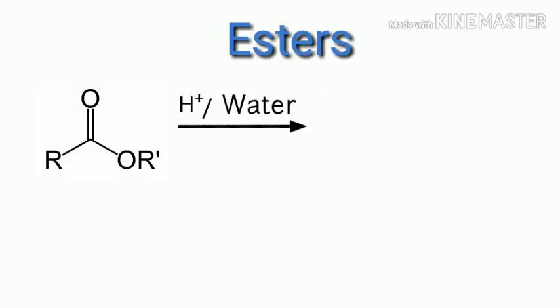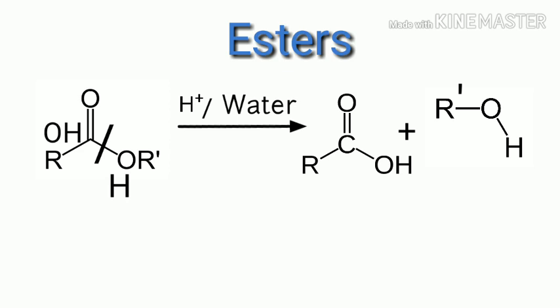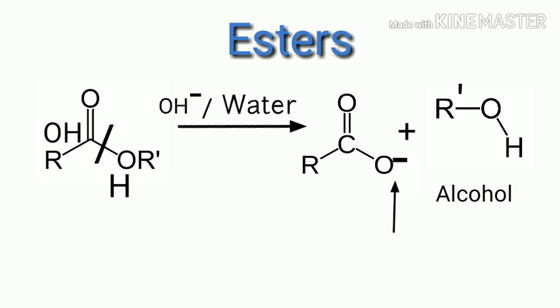In most cases the negative charge will be O²⁻ and the positive will be a carbocation. Let's start with esters. In presence of H⁺ and water, ester hydrolysis occurs in which the carbon-oxygen bond breaks. Carbon gets the OH⁻ and oxygen gets H⁺. Finally we will get one acid and one alcohol as products.